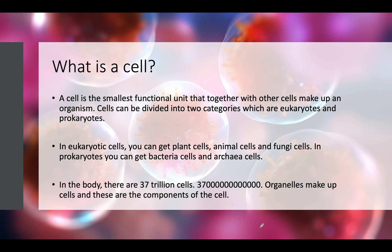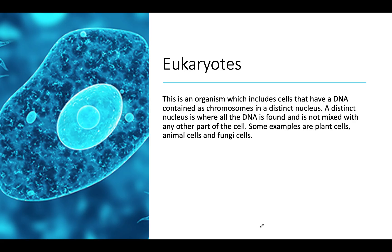Approximately there are around 37 trillion cells in our body. Inside cells there are organelles, and these are the components of the cell. As you can see, 37 trillion is a really big number — that's how many cells there are in our body approximately. So, there are two categories of cells: eukaryotes and prokaryotes.